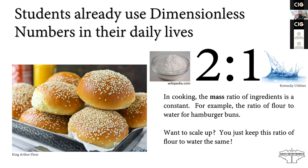With that motivation, I like to take students through what they already know but don't realize about non-dimensional numbers — starting with things they run into in their daily lives. For example, in cooking, if you're going to cook hamburger buns, there's always a constant mass ratio of flour to water. For hamburger buns, that happens to be two to one. So if we have two kilograms of flour, we have one kilogram of water, and the dimensions cancel. This is a non-dimensional ratio students use every day.